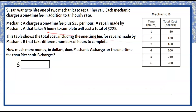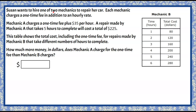Here's our question today. Susan wants to hire one of two mechanics to repair her car. Each mechanic charges a one-time fee in addition to an hourly rate. Mechanic A charges a one-time fee plus $35 per hour, and a repair made by Mechanic A that takes five hours to complete will cost a total of $225. This table shows the total cost, including the one-time fee, for repairs made by Mechanic B that take different numbers of hours to complete.